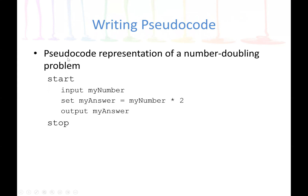Here is a pseudocode representation of a number-doubling problem. Our problem is to ask the user to enter an input, then we double the input, then we print the results. In this course, we use 'start' at the beginning of the pseudocode and 'stop' at the end. We start with the word 'start', then we use the keyword 'input' and store the input in a variable named 'myNumber'. In the operation section, we use the keyword 'set' for the arithmetic operation — we multiply the input by two and assign the result to a variable named 'myAnswer'.